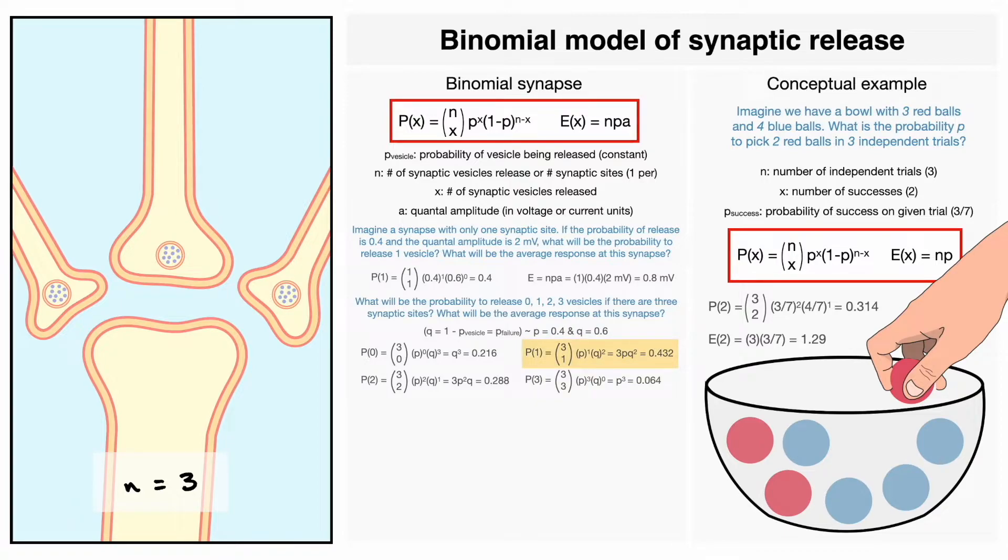For example, for one vesicle released, it can either be the left one, the middle one, or the right one that fires. Hence, there are 3 possibilities for firing, and the same logic applies to the other cases.